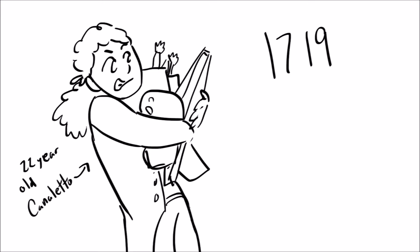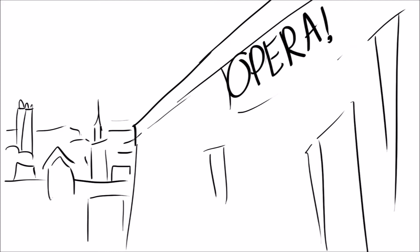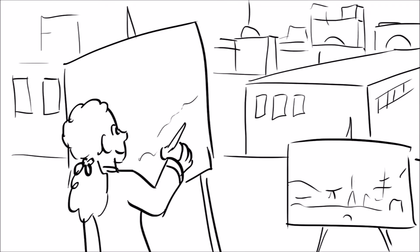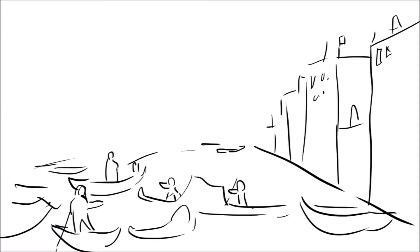In 1719, when he was 22 years old, his dad took him on a trip to Rome to work on a backdrop for a big fancy opera. But Canaletto snuck out — he didn't want to do it. He went around the town because he actually wanted to paint. He wanted to paint the scenery. There were a lot of artists painting what the town looked like, and he fell in love with Rome's appearance.